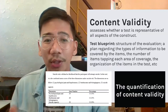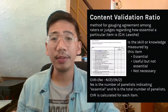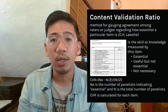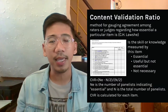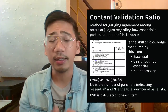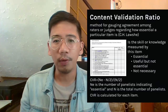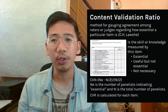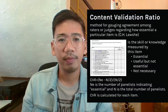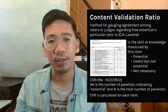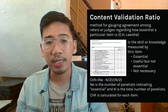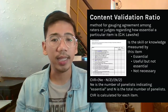How do we quantify content validity? We use what is called the Content Validation Ratio (CVR), a method for gauging agreement among raters or judges regarding how essential a particular item is. As a test developer, you gather raters who are experts in the research field. Each item is evaluated on whether the skill or knowledge it measures is: essential, useful but not essential, or not necessary.